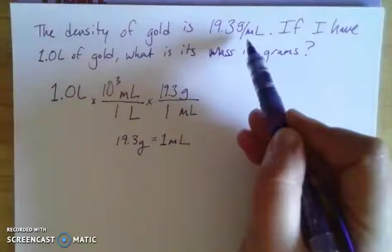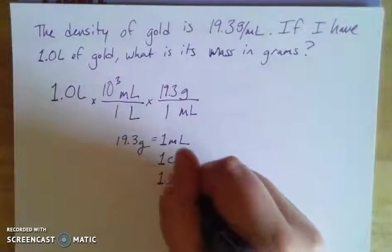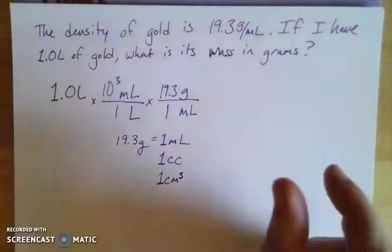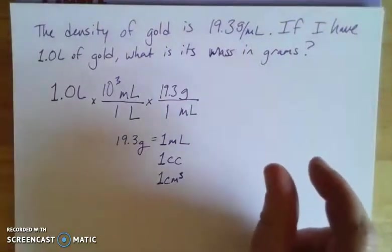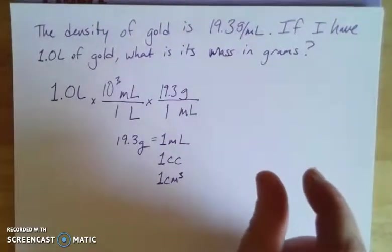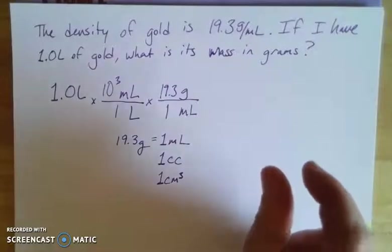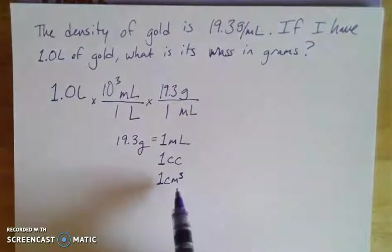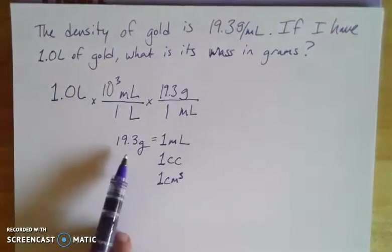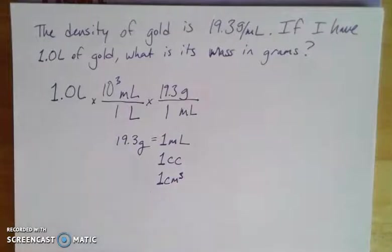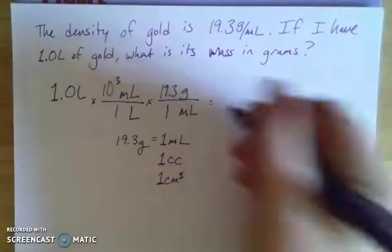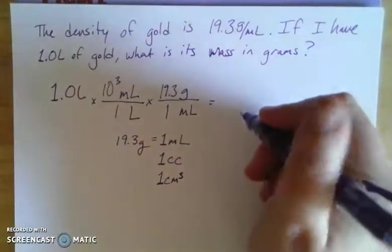One milliliter is one cubic centimeter, or 1cc. If we think about a cube of gold that has a centimeter on each side - length times width times height, each one of those is a centimeter - then that gold would have a mass of 19.3 grams. That's the information we're given from density. We can use that information in our ratio here, and when we multiply this out we end up